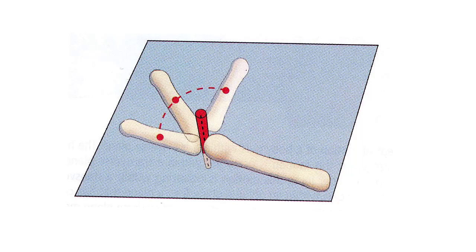When a joint — or anything for that matter — rotates about an axis, it also rotates in a plane. That plane is perpendicular to the axis. When things rotate, they rotate in a plane about an axis.